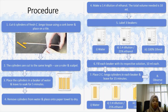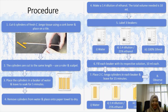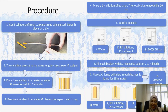After that, remove the cylinders from the water and place them on a paper towel to dry. Make a 1-to-2-4 dilution of ethanol; the total volume needed is 10 ml. Take three beakers and label them: the first as water, the second as 1-to-2-4 dilution (25% ethanol), and the third as 100% ethanol. Fill each beaker with its respective solution, then place two Curcuma longa cylinders in each beaker and leave them for about 15 minutes. After 15 minutes, observe the color changes of the solution in every beaker and record your results.